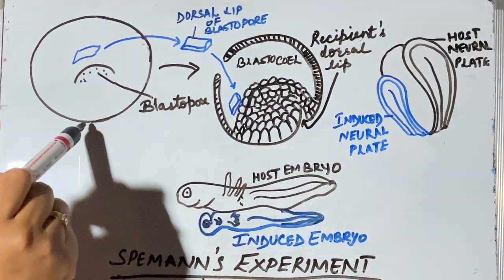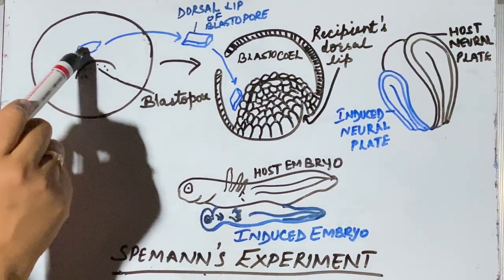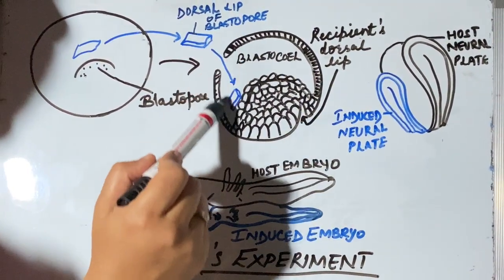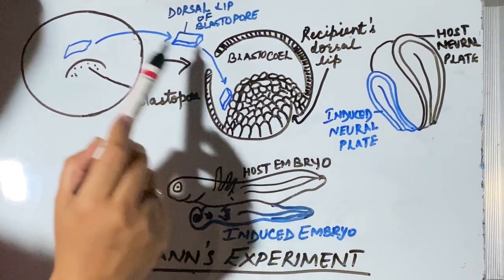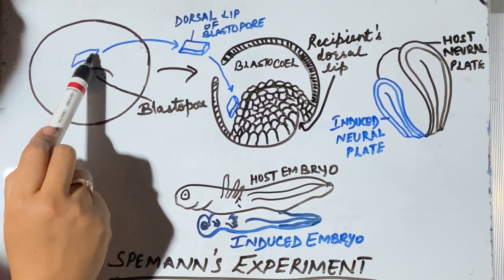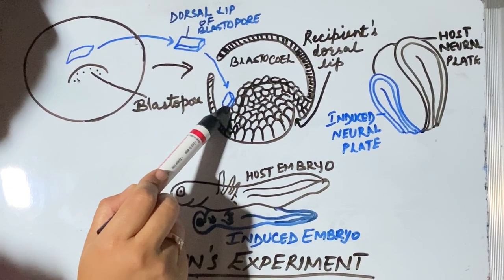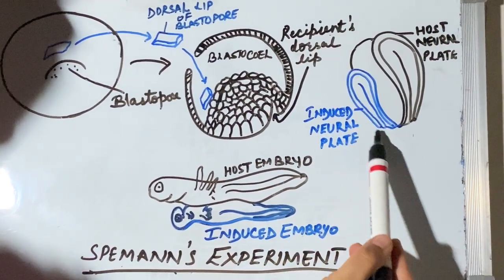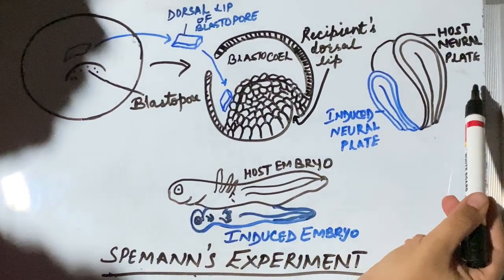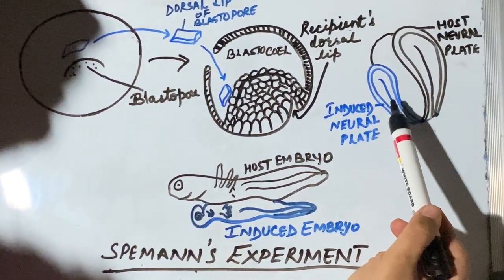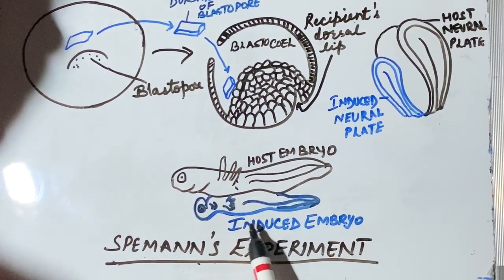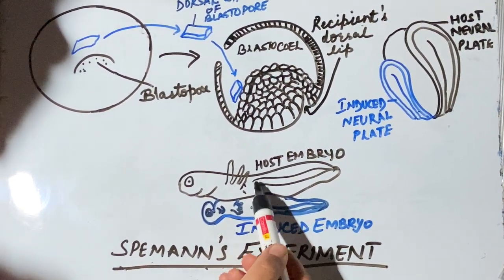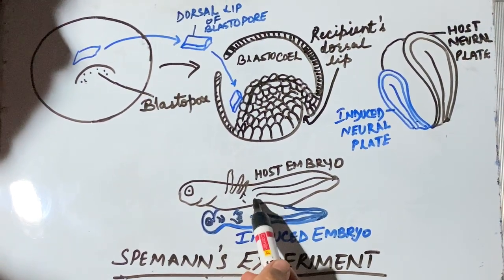What he did was take the dorsal lip from the early gastrula — the dorsal lip of the blastopore — and insert it into the belly region of another gastrula, another embryo which was also in the gastrula stage. What did they observe? Another neural plate was induced into the belly region of the host embryo, and ultimately it led to the formation of a complete embryo. As you can see in the diagram, like Siamese twins, two embryos are developed — an induced embryo developed over the host embryo.